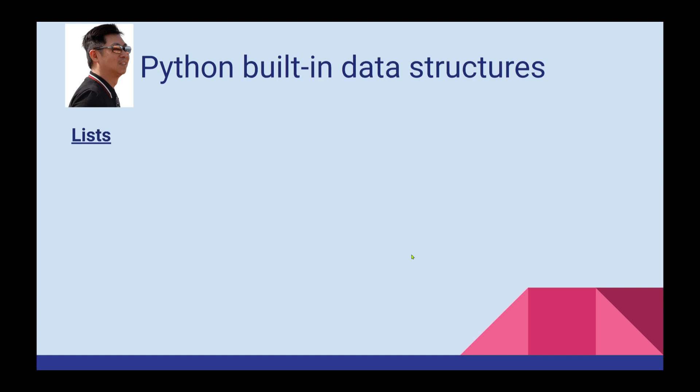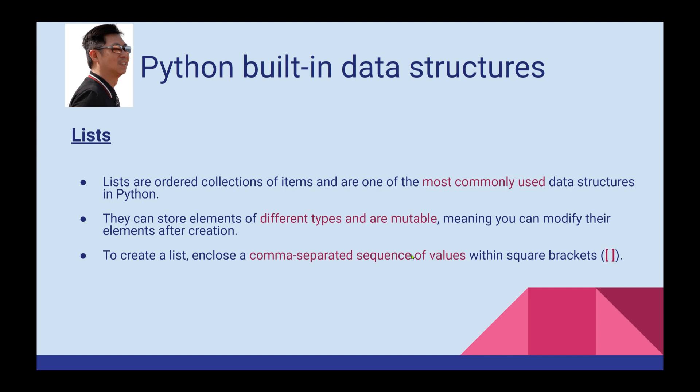Let's talk about the list. Lists are ordered collections of items and are one of the most commonly used data structures in Python. They can store elements of different types and are mutable, meaning you can modify the elements after creation.